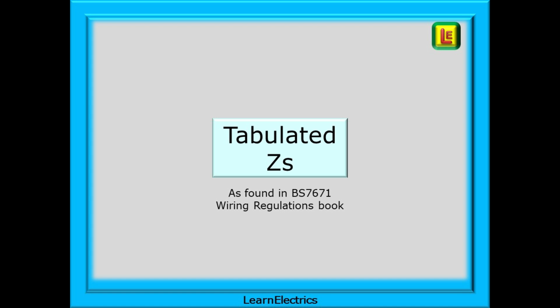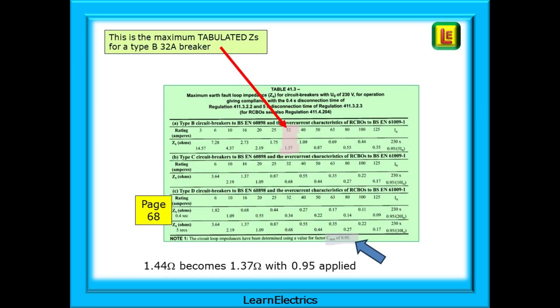Now for tabulated ZS, as found in Part 4 of the BS7671 wiring regulations book. This is Stage 2 of the process. Staying with our 32-amp Type B circuit breaker, we are now on page 68 of the Wiring Regs book. This is Table 41.3 and covers both 0.4-second disconnection times for final circuits and 5-second disconnection times for distribution circuits.